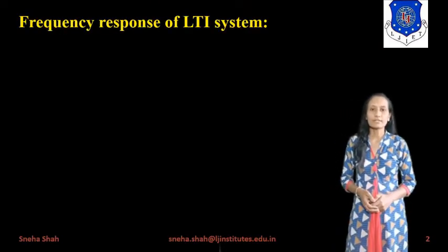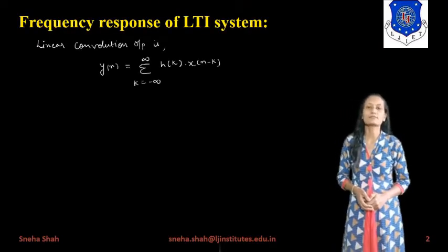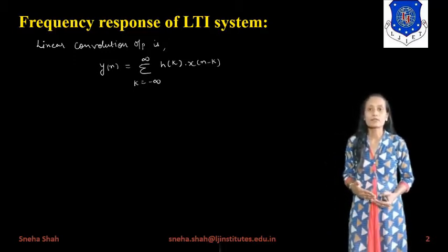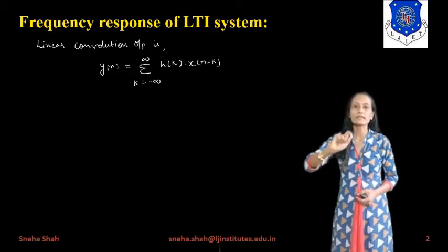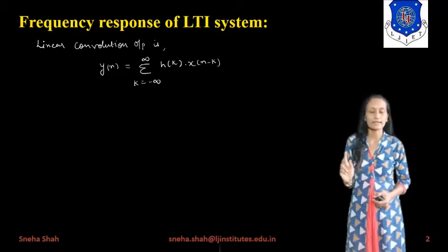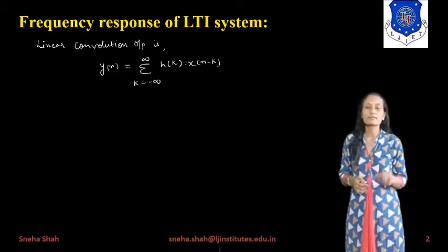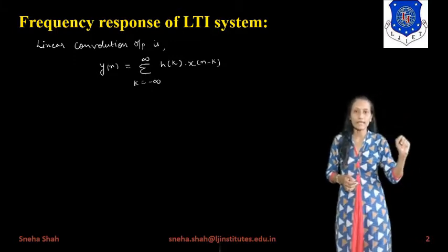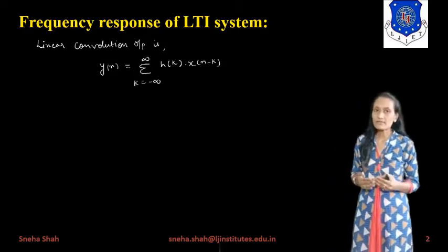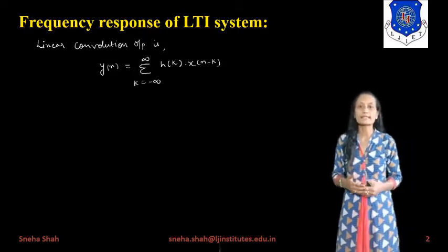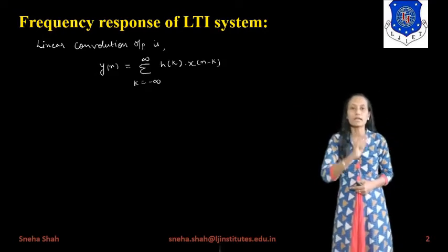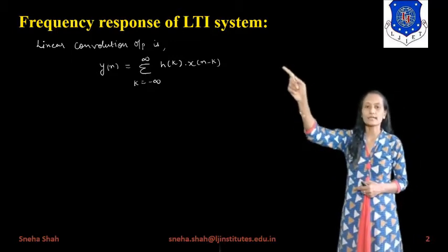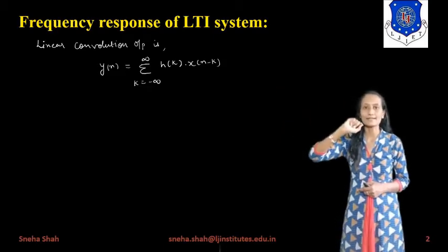Suppose if we want to derive the frequency response of any LTI system, so first of all we will take the convolution output. The linear convolution output is y(n) = x(n) convolved with h(n). The equation of linear convolution is y(n) = summation k equals minus infinity to infinity of x(k) h(n-k). Using the commutative property, y(n) = summation k equals minus infinity to infinity of h(k) x(n-k).